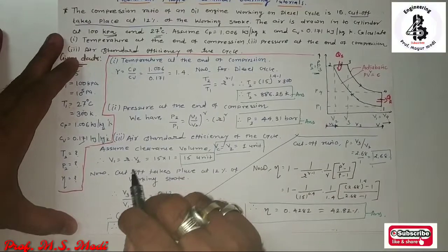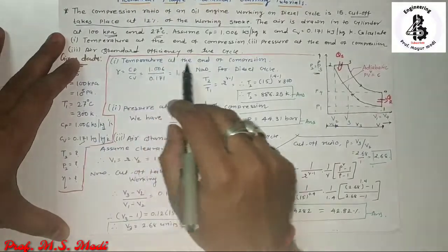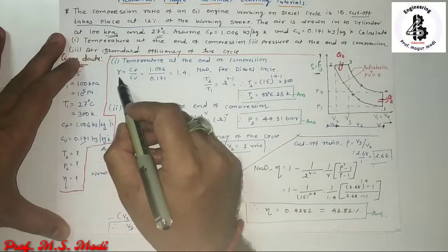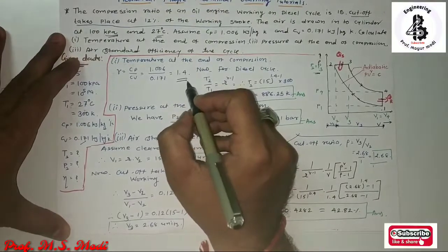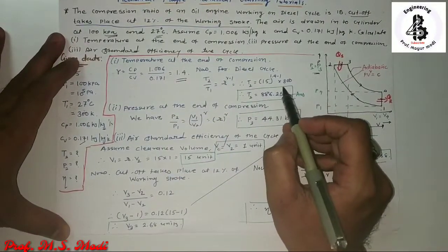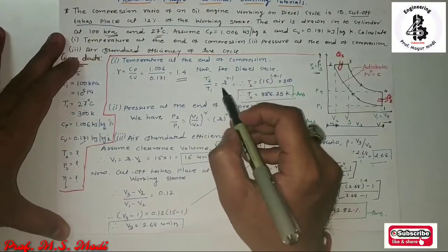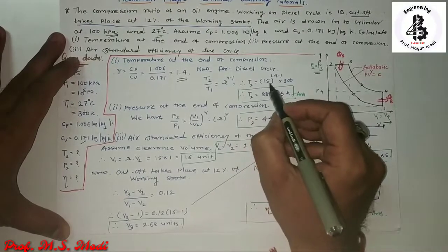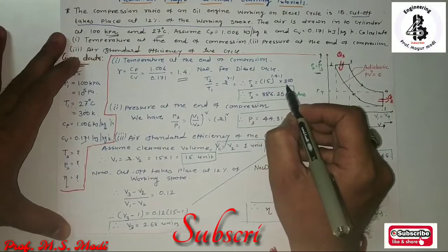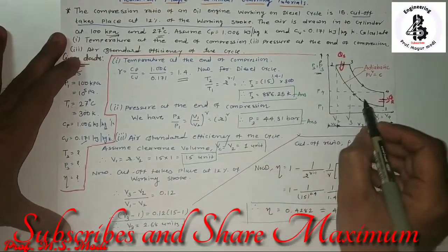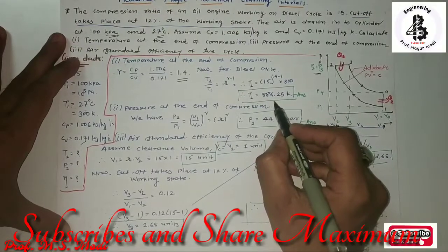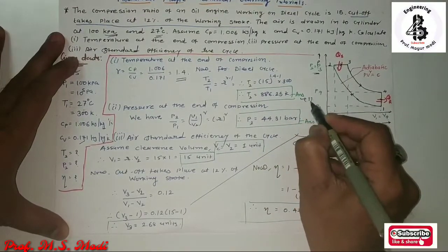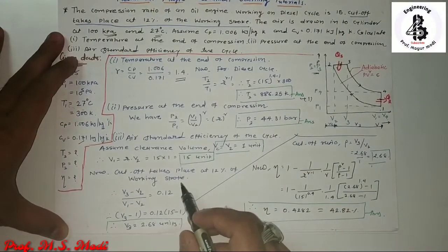Now for the calculation part. First, the temperature at the end of the compression process. From the relation of Cp, Cv, and gamma: gamma equals Cp divided by Cv, which gives gamma equal to 1.4. For the diesel cycle, T2 divided by T1 equals R raised to the power gamma minus 1. So T2 equals 15 raised to 0.4 multiplied by 300, giving T2 equal to 886.25 Kelvin. That is answer number 1.